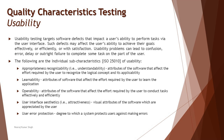Usability includes several sub-characteristics. The first is appropriateness recognizability, also called understandability — an attribute that affects the effort required by the user to recognize the logical concepts and their applicability. The language used, the options, and the graphics contribute to helping an end user understand the product before using it. Field names and labels help the user understand what the product is about before they start interacting with it.